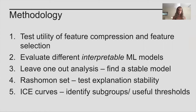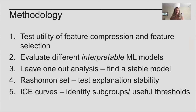The methodology first tests the utility of compressing the 107-variable feature space into a much smaller number of components, compared against theory-based feature selection from the literature. We then evaluate the performance of multiple interpretable machine learning models — regressions, decision trees, and random forests — selected because you can extract the level of importance of each predictor. This isn't pure prediction: we're using these models to get a better understanding of the complex explanations which might underlie modern-day slavery.